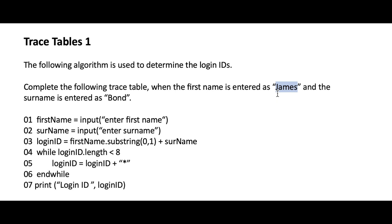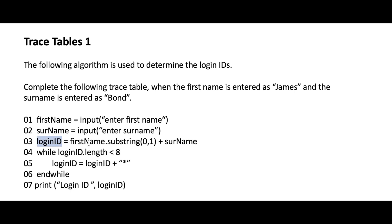So J would be position zero, A would be position one, and so forth. This command goes to the first character of the string — in this case J — and returns one character, so it only returns J. It then concatenates the surname to create the login ID, so in this case that creates a new string called 'J bond'.